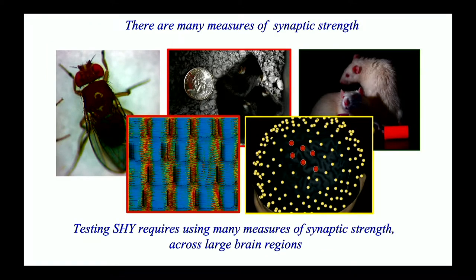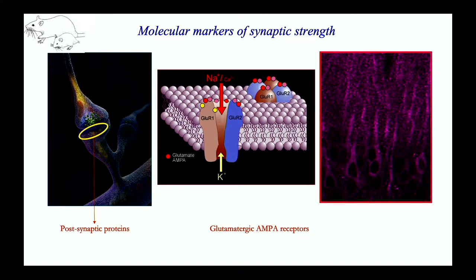The hypothesis is simple and testable, though not trivial to measure — measuring synaptic strength has taken us 20 years because you have to use many models and many methods. Many models also because if this is a very important function of sleep, it has to be true across species. It cannot only be true in humans or in a mouse — it has to be true in a fly, also in zebrafish. So we have used many markers.